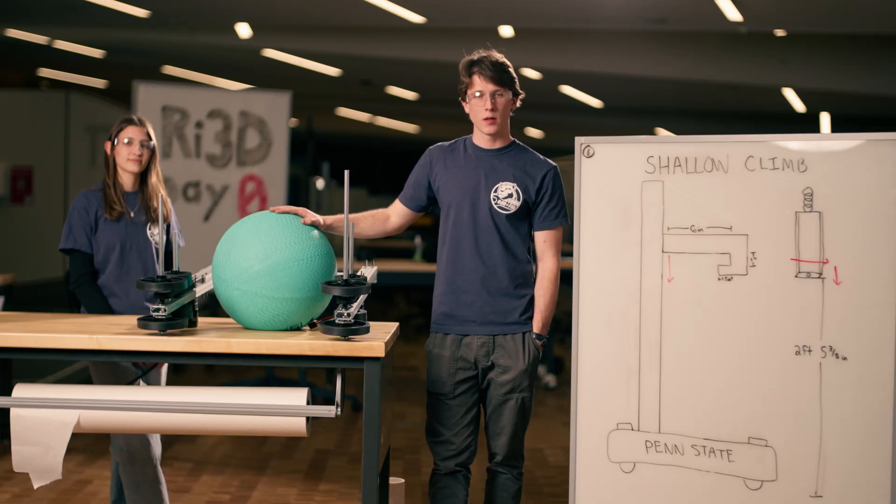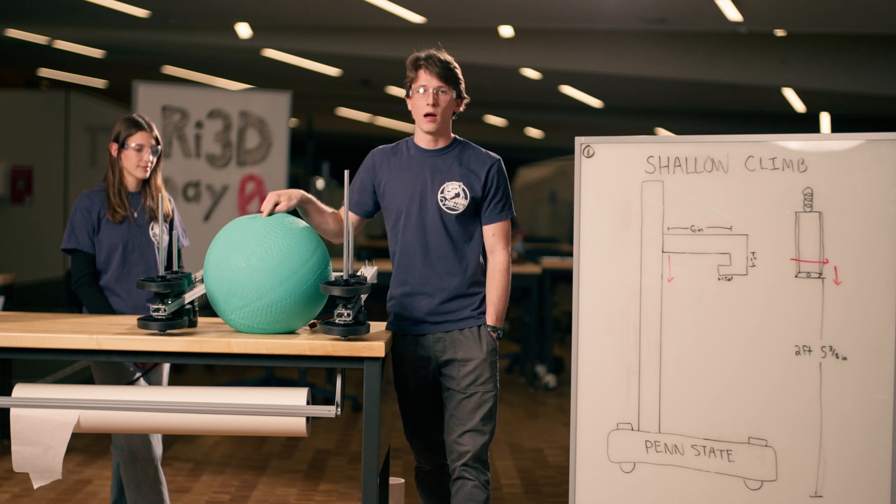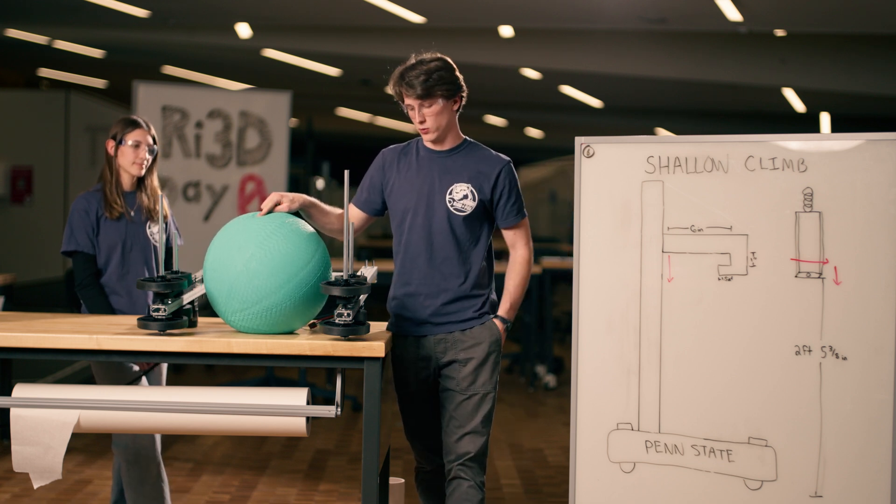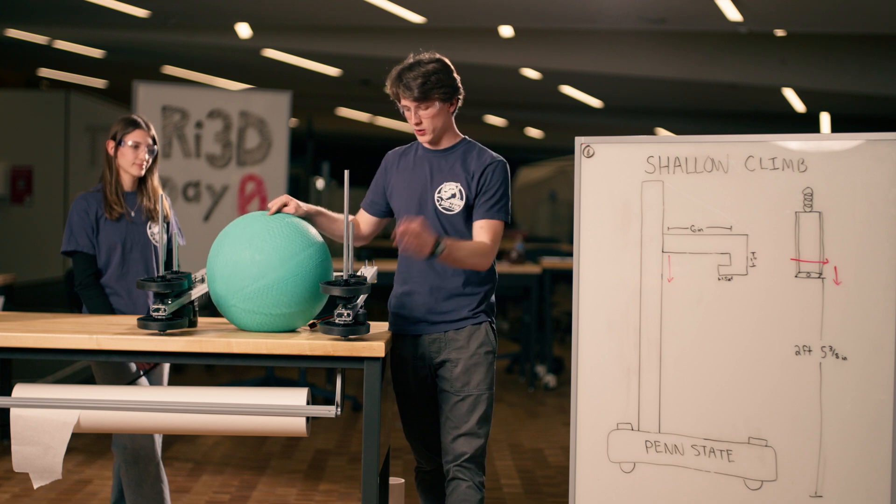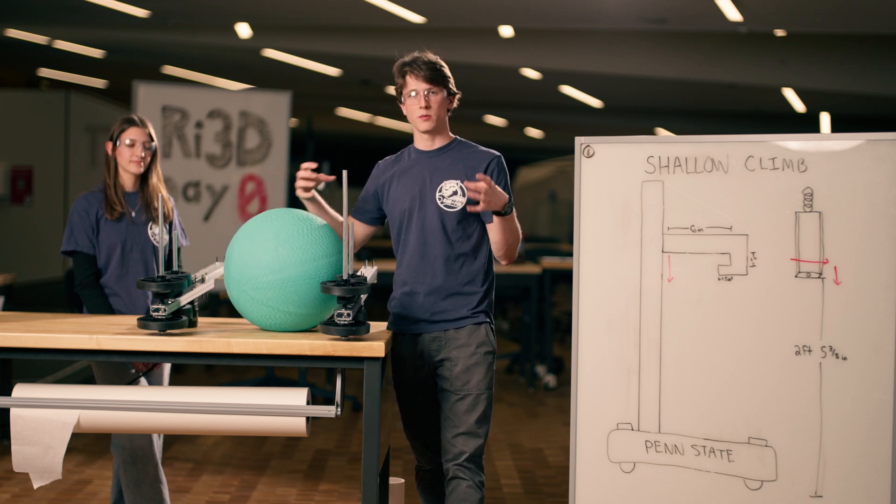Our fifth prototype that we'll be looking into more tomorrow is a traditional flywheel shooter orientation for algae into the net. We'll try to get numbers for the speed that we spin up our flywheels to and the distance of compression between the wheels.